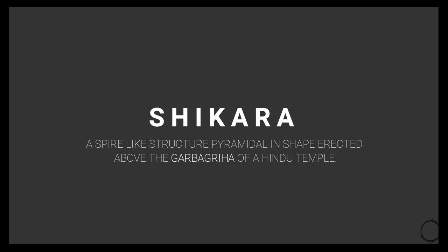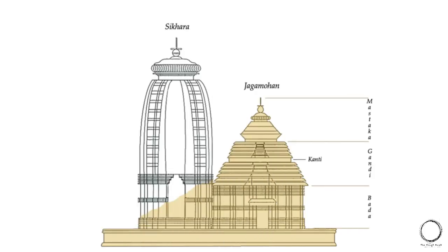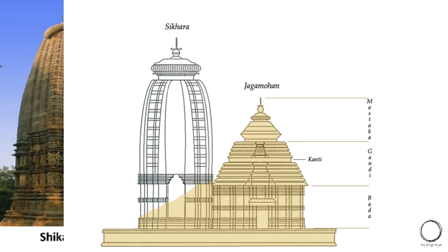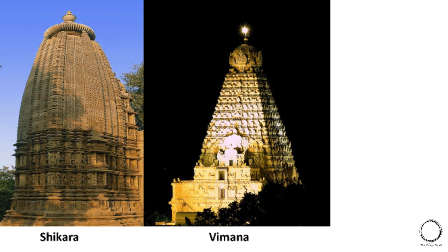The next term is shikara, which means a spike-like structure, pyramidal in shape, erected above the garbhagriha of a Hindu temple. As you can see in the diagram, the shikara is the centermost part of the temple — shikara basically means 'the mountain,' and hence the tallest part of the temple is called the shikara. Vimana is the triangular-shaped structure; you can clearly see the difference in the images.